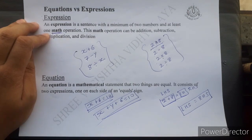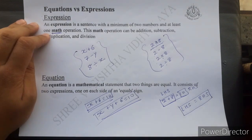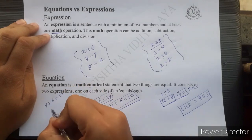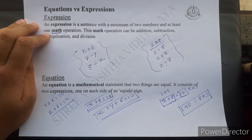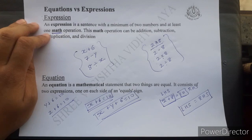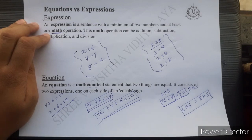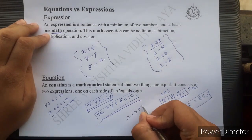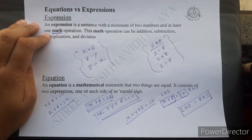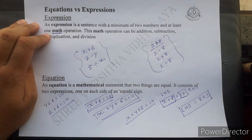Instead of x you can take any alphabet, but there should be only one alphabet in the equation. For example, x plus 6 equals 10, or y plus 6 equals 10, or z plus 6 equals 10. If the equation has one alphabet, it is linear equation in one variable; two alphabets — two variables; three alphabets — three variables. For example, x plus y plus z equals 10 is a linear equation in three variables.